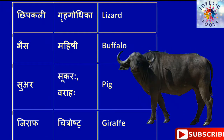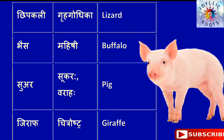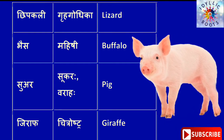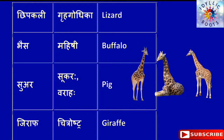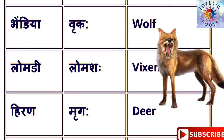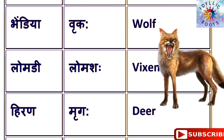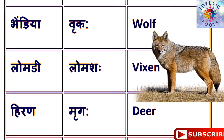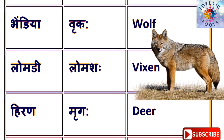भैंस को English में कहते हैं Buffalo और संस्कृत में कहते हैं महिषी। सूअर को English में कहते हैं Pig और संस्कृत में कहते हैं वराहः। जिराफ को English में कहते हैं Giraffe और संस्कृत में कहते हैं चित्रोष्ट्रः।